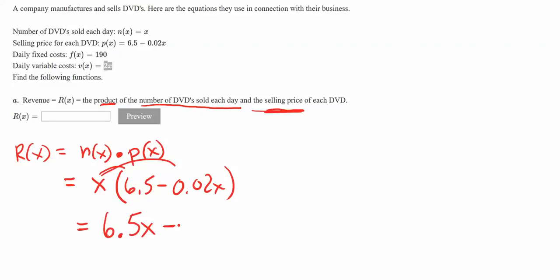R(x) equals 6.5x minus 0.02x squared. You can write it like that, or move the 0.02x squared to the front, but normally we'll leave it just like that. That's part A.